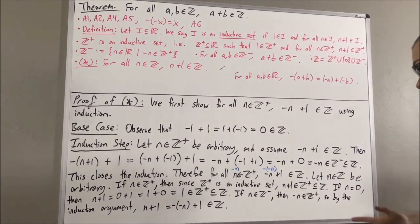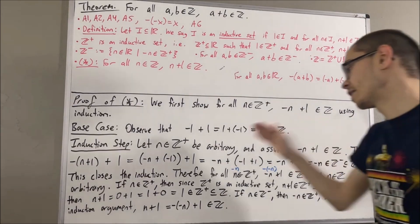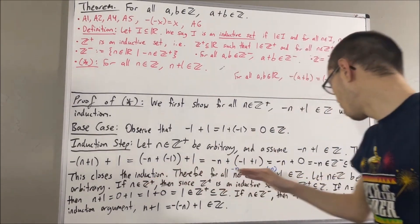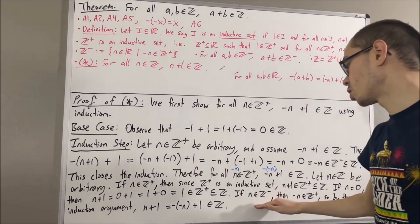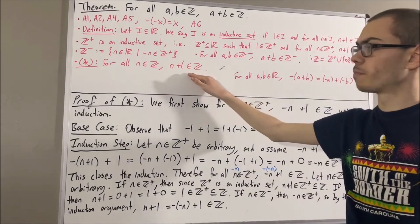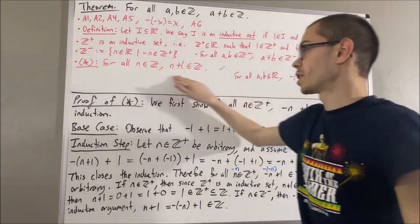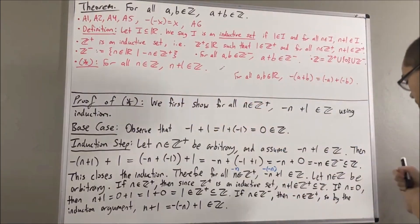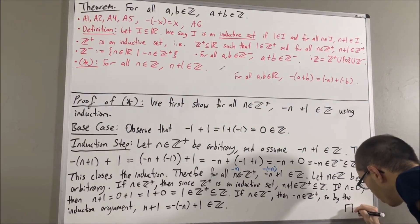So no matter what integer n we have — whether n is a positive integer, n is equal to 0, or n is a negative integer — we always have that n plus 1 is an integer. So we have proven that star is true, and this completes the proof.